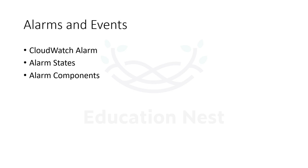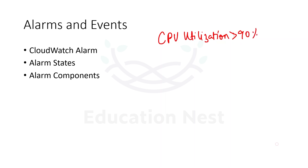The next topic is about alarms and events. When we talk about CloudWatch, we can also create specific alarms. What are CloudWatch alarms used for? If something is reaching my threshold, I would want to create one alarm. For example, if my EC2 is having CPU utilization greater than 90%, then I want to get notified. So if you want to set notifications, you have to create CloudWatch alarms.